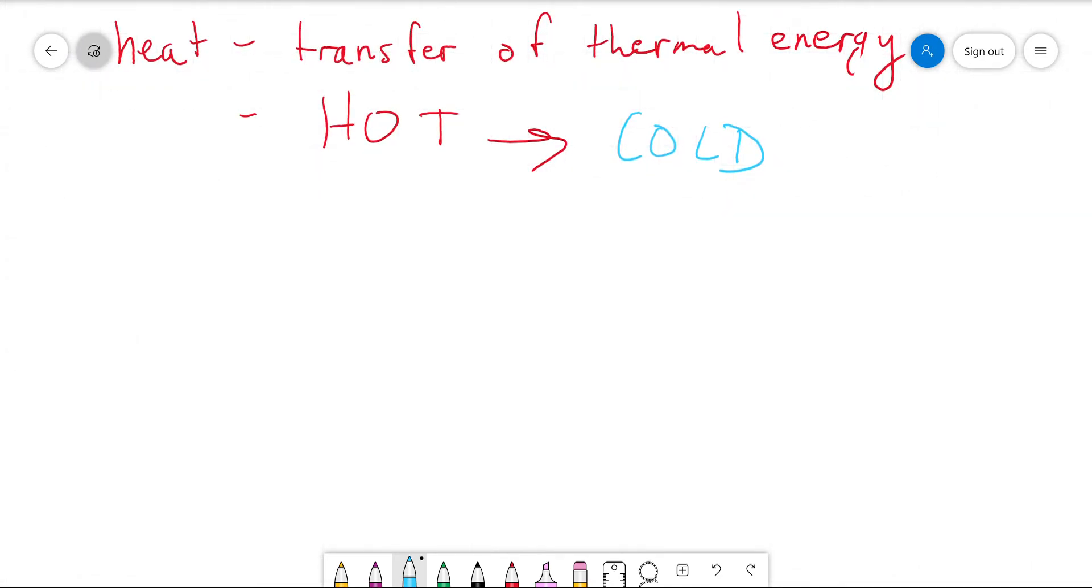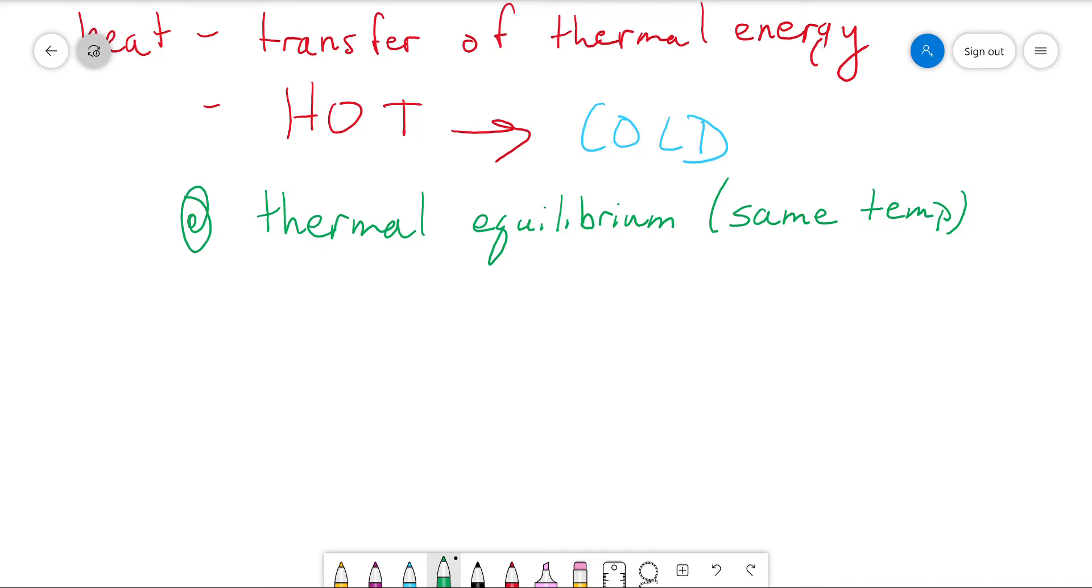So heat can only transfer, or thermal energy can only transfer, from hot things to cold things. When those two things get to the same temperature, they're at thermal equilibrium. No heat can flow at thermal equilibrium.